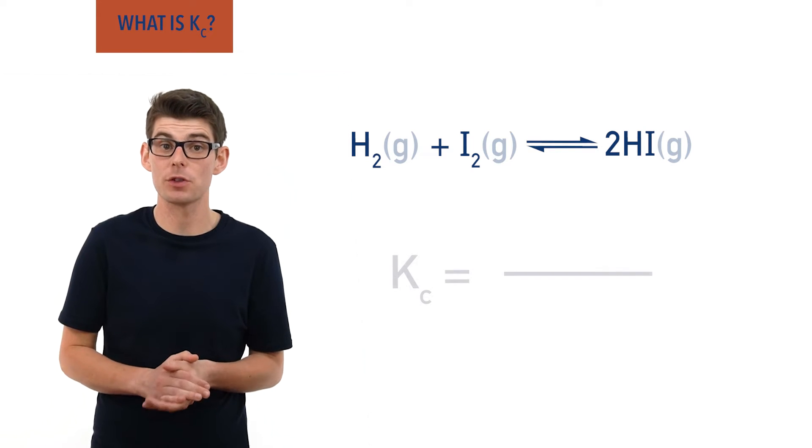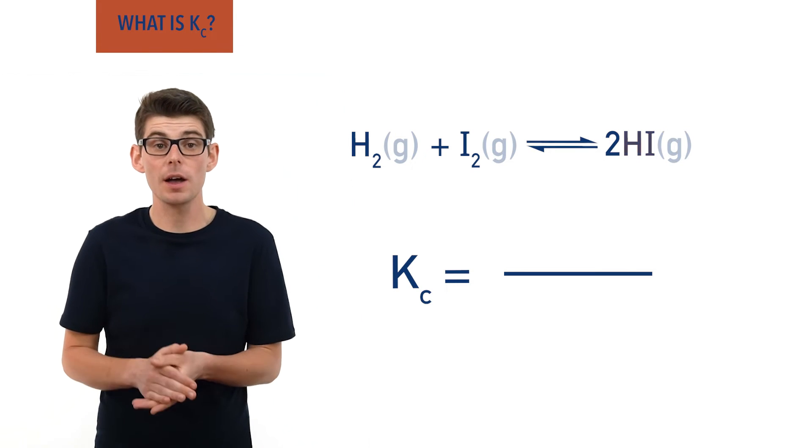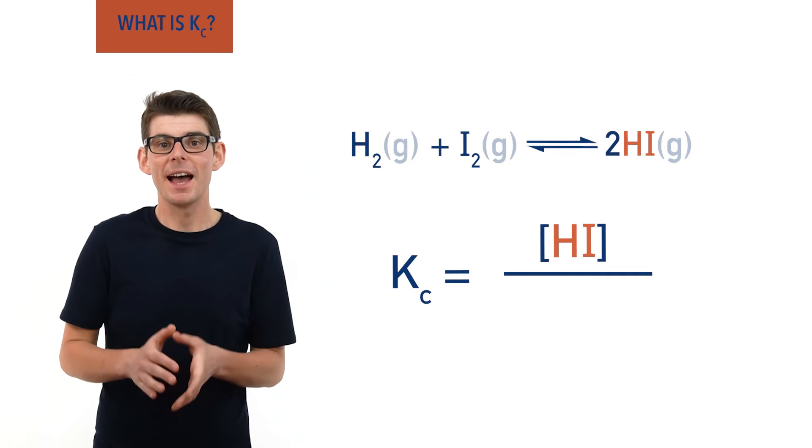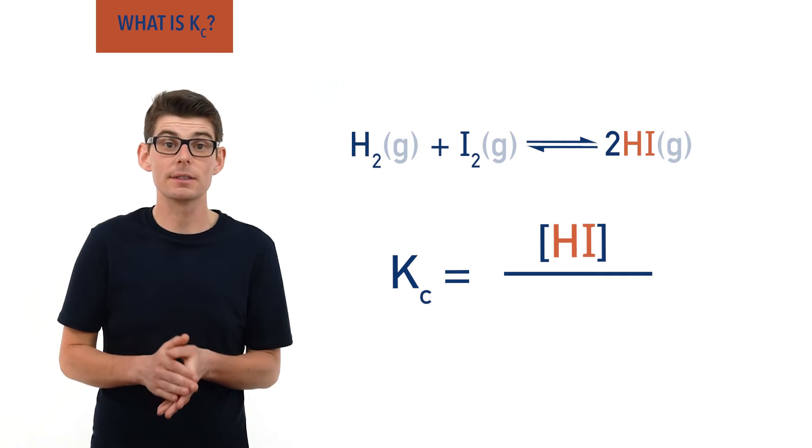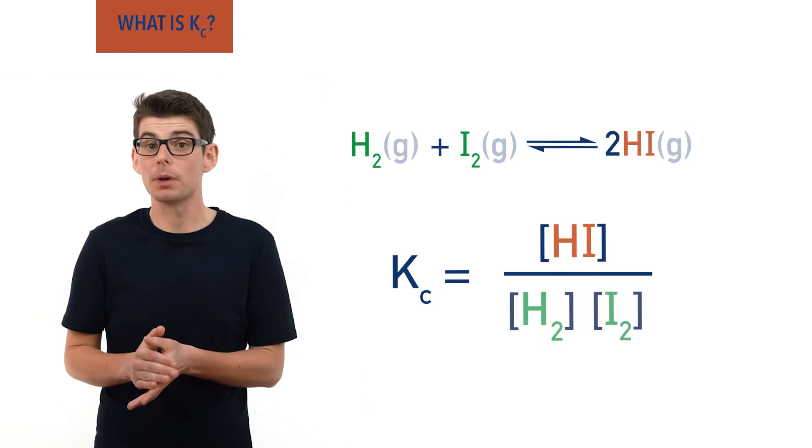To write the Kc expression for this system, we would put the product concentration, HI, on the top of the fraction, square brackets, and the concentrations of the reactants, H2 and I2, on the bottom of the fraction multiplied by each other.